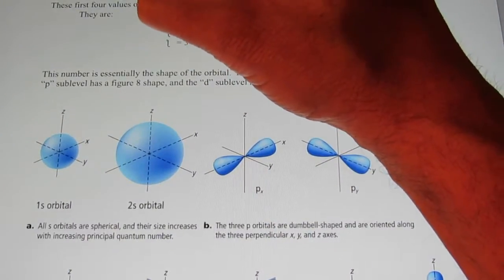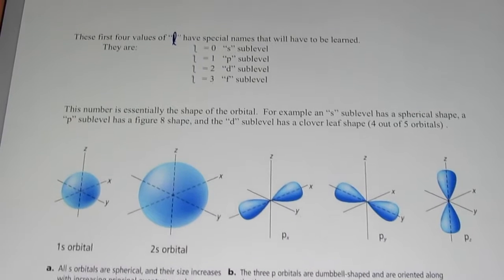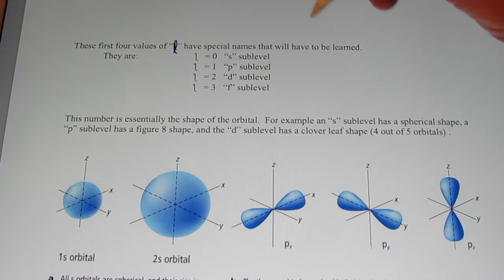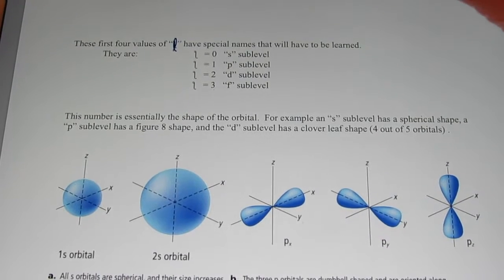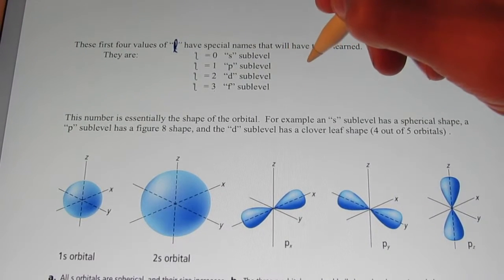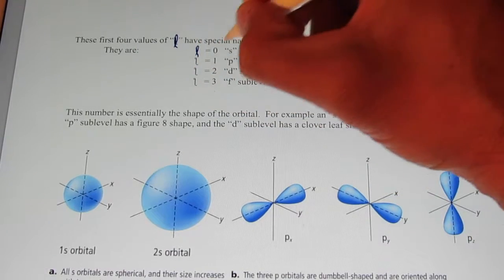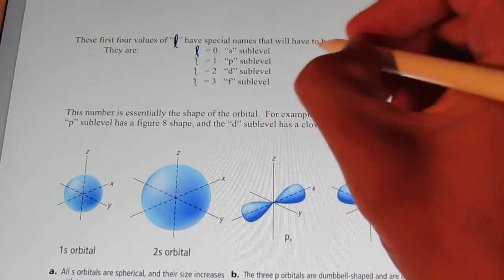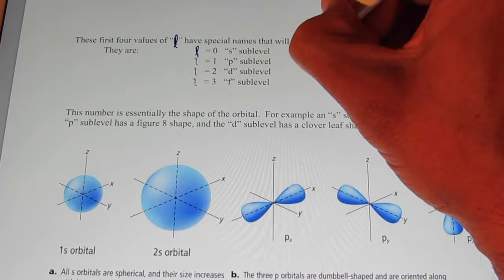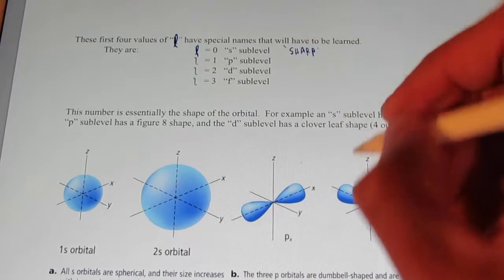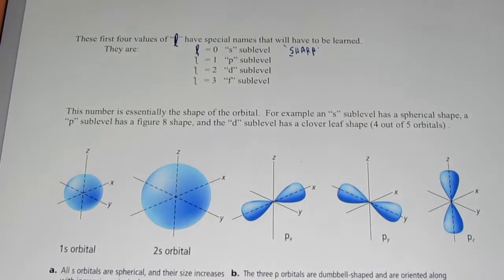These first four values of L have special names that will have to be learned. Now we actually don't have to learn their names. We just need to know the first letter that the name starts with. So when L is equal to zero, we call that the S sublevel. It used to be called the sharp sublevel. But we just call it the S sublevel now.